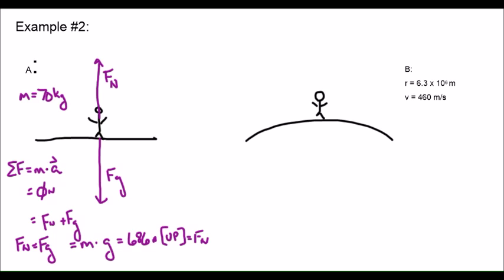But let's take a look at it if we acknowledge that the Earth is actually a sphere that's rotating. In this case, in part B here, we have a radius. The radius of the Earth is 6.3 times 10 to the 6 meters. We also have, if we pretend we're standing on the equator of the Earth, a rotational velocity which is about 460 meters per second.